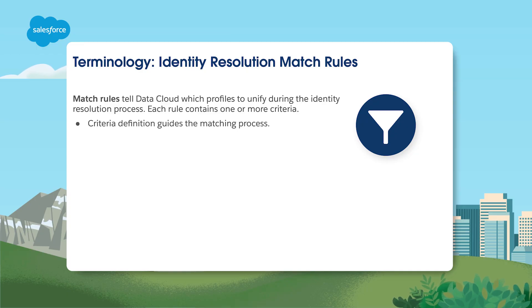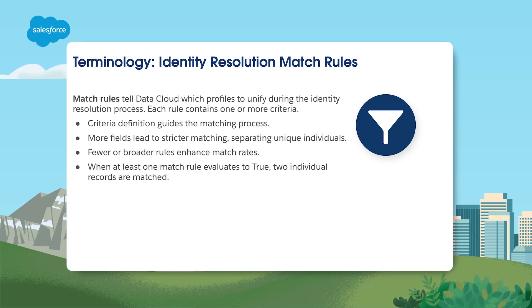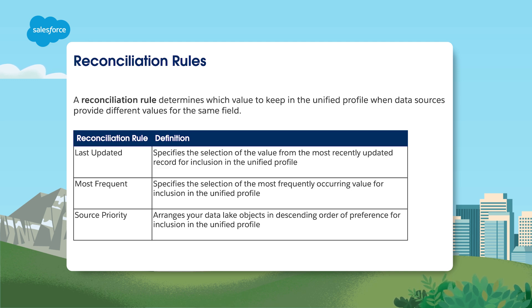You establish matching rules that set the criteria for determining which individuals should be linked to each other. When at least one match rule is true, two individual records are matched. Reconciliation rules resolve what value to use for those matched records when there are conflicts — for example, do you want the most recent, the most used, or something else?